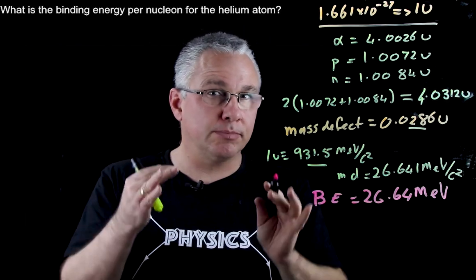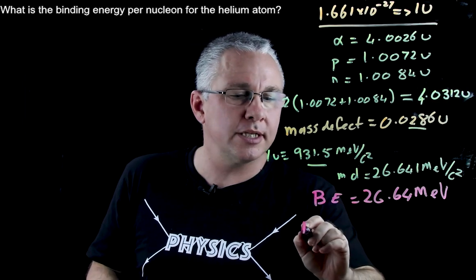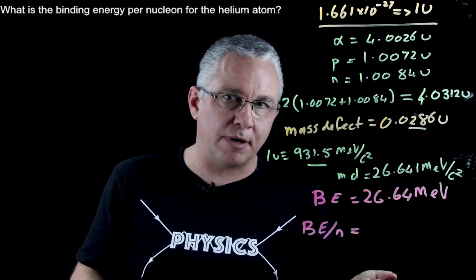But that's the binding energy complete. We need the binding energy per nucleon. Well there are four nucleons so therefore the binding energy per nucleon is simply that divided by four.